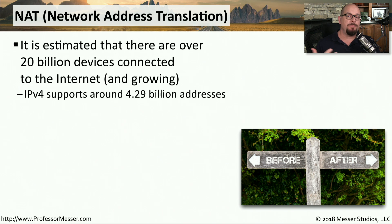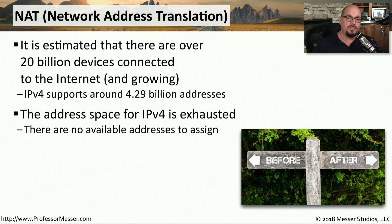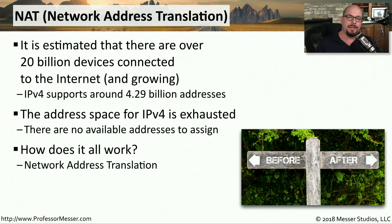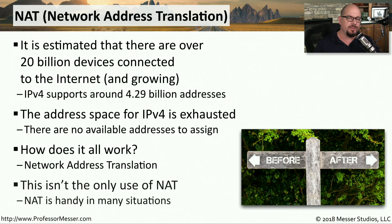It's estimated that there are over 20 billion devices connected to the internet, but we know that IPv4 can only support just over 4 billion addresses. This means the entire address space for IPv4 has been easily exhausted, but we still have a requirement to connect these 20 billion devices. The way we do that is by using Network Address Translation, or NAT. This is one of the most common ways so that you can have many devices on the inside of your network all translating out to a single device on the public internet side.